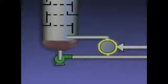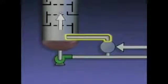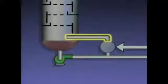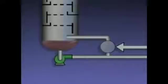Vapors from the reboiler, or in some cases a mixture of vapors and liquid, re-enter the tower. The vapors then rise up in the tower. These vapors, and the heat they contain, are often referred to as boil-up. The hot boil-up provides heat that's needed for the distillation process to take place in the tower.